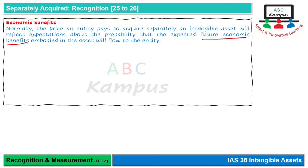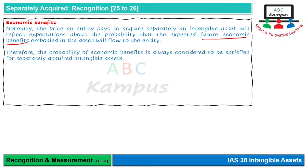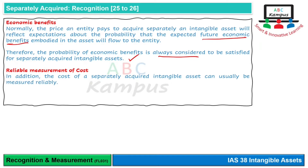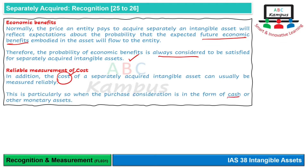When a company pays, say, 15 million for a brand, that payment reflects the expectation that the brand will generate benefits of 15 million or above. You may not be sure exactly when or how, but because you expect future economic benefits, the probability criterion is considered satisfied when an intangible asset is separately acquired. Similarly, reliable measurement of cost is available since the amount you pay is the cost.